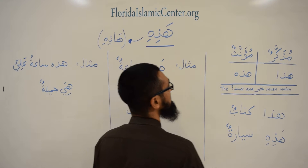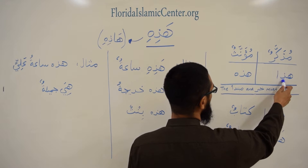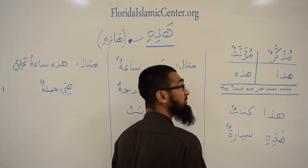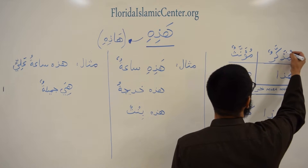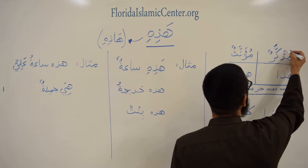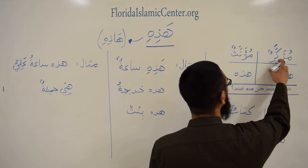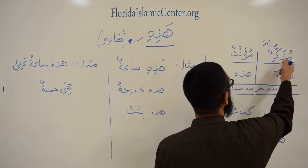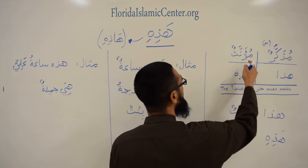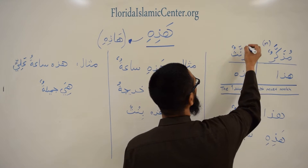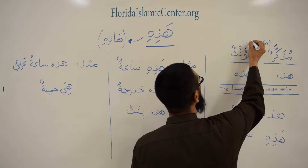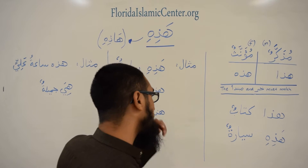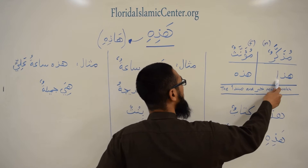So there is 'hadha' which is masculine and 'hadhi' which is mu'annath. The word for masculine, which you should know by now, is 'mudhakkarun' — mudhakkar means masculine. And mu'annathun — mu'annath means feminine. So hadha is used for al-mudhakkar, and hadhi is used for al-mu'annath.